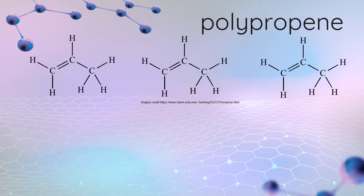Let's look at another example: we're going to take propene molecules and make polypropene, also known as PP plastic. We use it for toys, car bumpers, syringes, and test tubes in the medical and scientific fields.